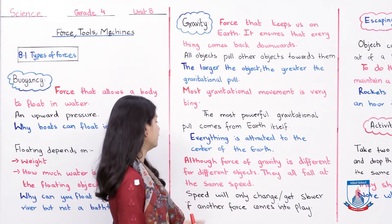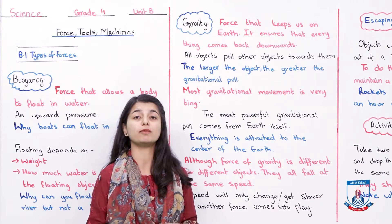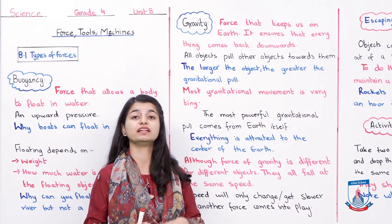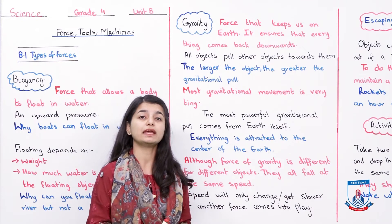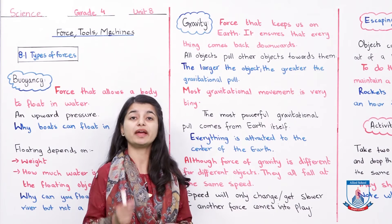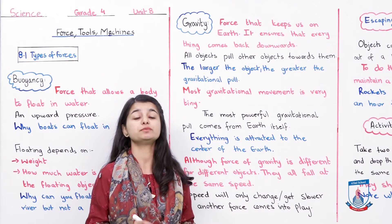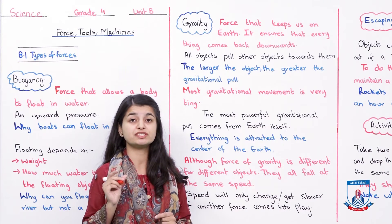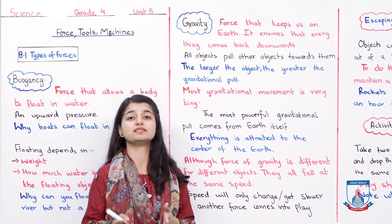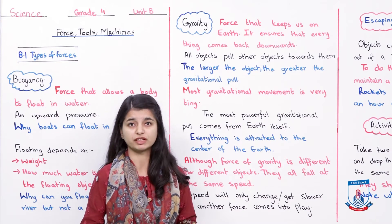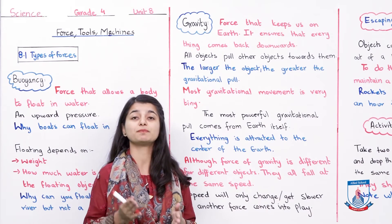Although the force of gravity differs for different objects, they all fall at the same speed. The gravitational pull may be different, but the speed of falling is always the same. If you drop two objects from a terrace at the same time, they reach the ground at the same time. However, this speed can change slightly if another force — such as friction or air resistance — acts on the objects, slowing them down.